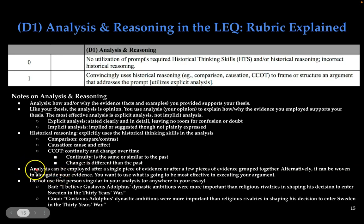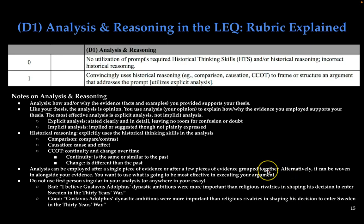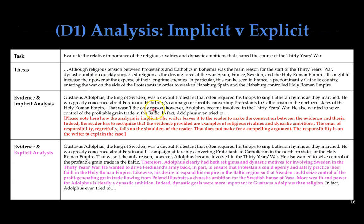Students always ask: where do I do analysis? If you list a fact, you then need to explain why it matters. That's the way I would do it — list a fact, explain why it matters, and explain how it supports your evidence. Some students list two facts, describe them, and then show the analysis and explain how it supports their thesis statement. Now let's look at an example of implicit analysis and explicit analysis. The prompt is about the Thirty Years War.